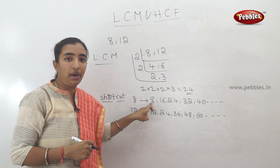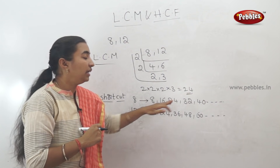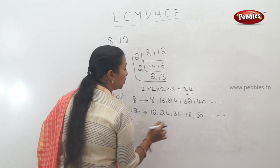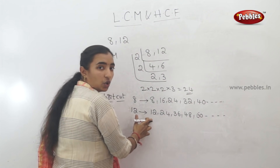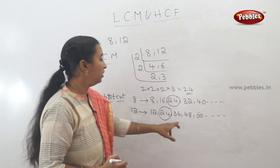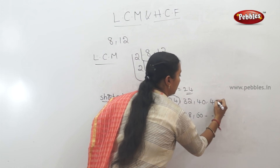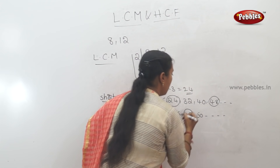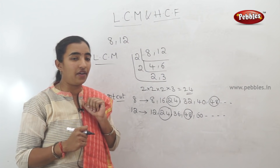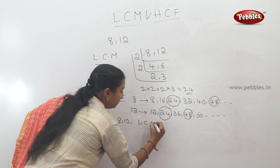Looking at the multiples: 8 — no common; 16 — no common; 24 — common! Both 8-table and 12-table share 24. 48 is also common, but the least common multiple is 24, not 48. So the LCM of 8 and 12 is 24.